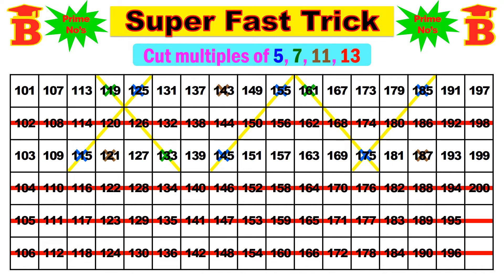Next, for 13, there is only one number: 169. This is the only number divisible by 13 in these rows — 13 × 13 = 169. And that is all.